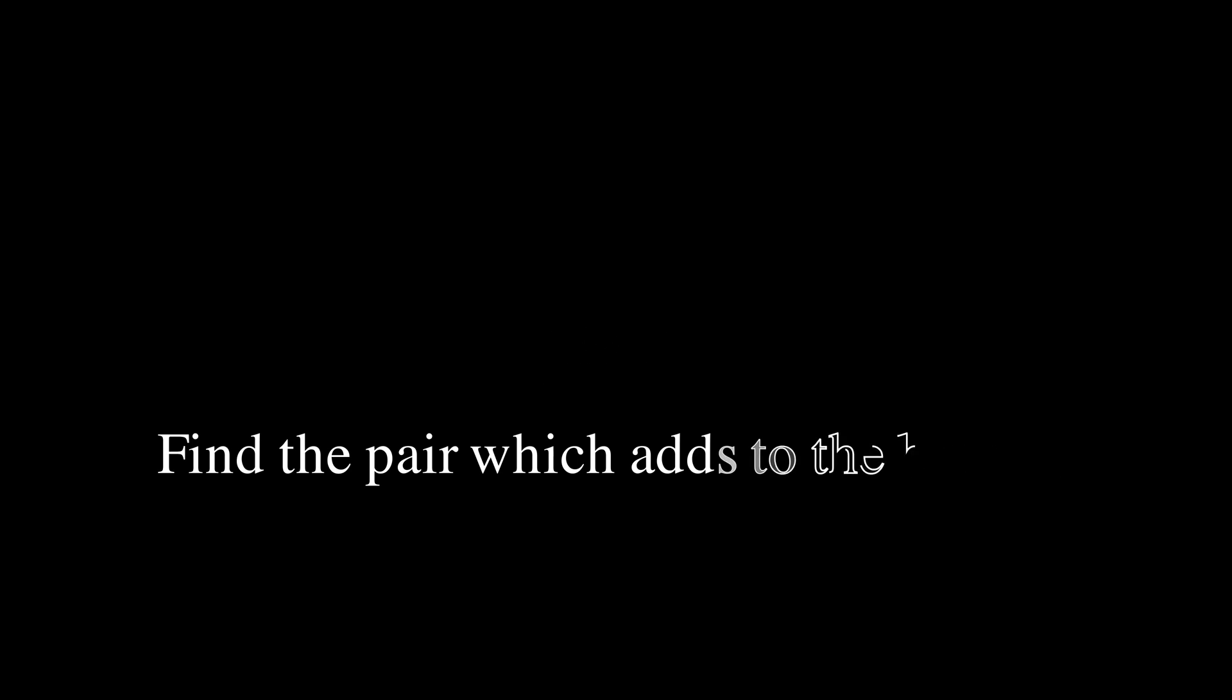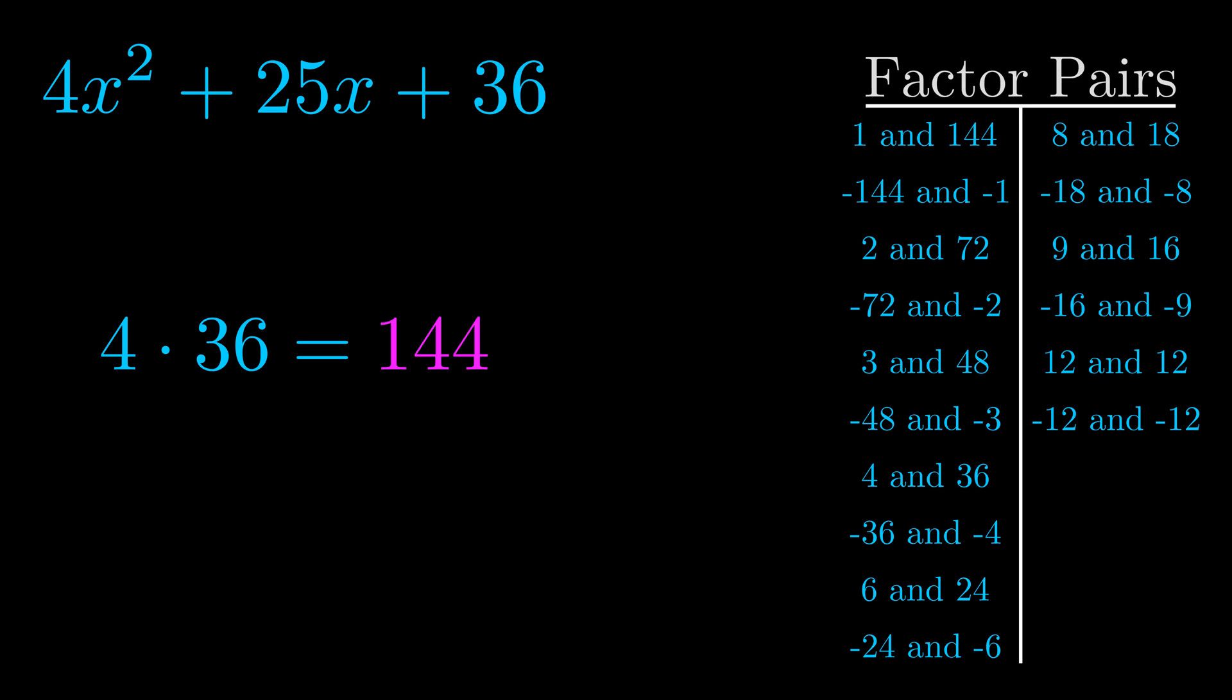The b value is the coefficient on the x term. That's the middle term, the one that we haven't done anything with yet. And really this is the only factor pair that we need.